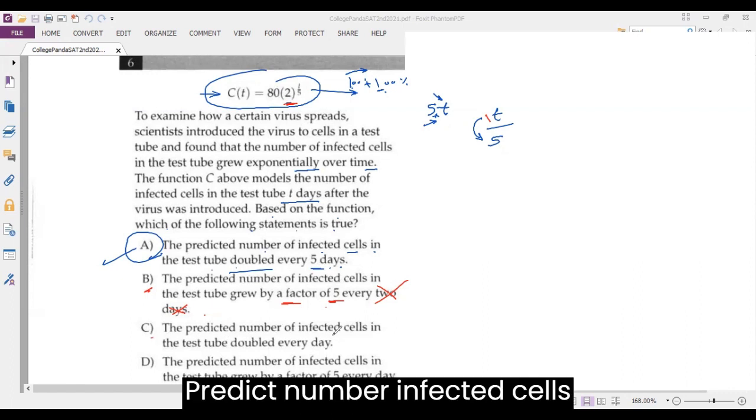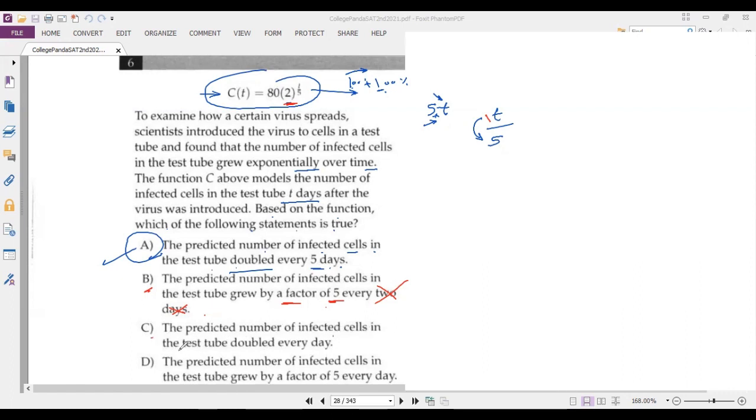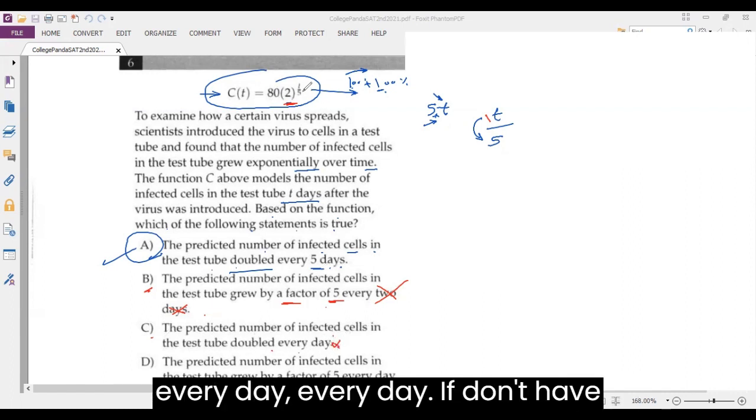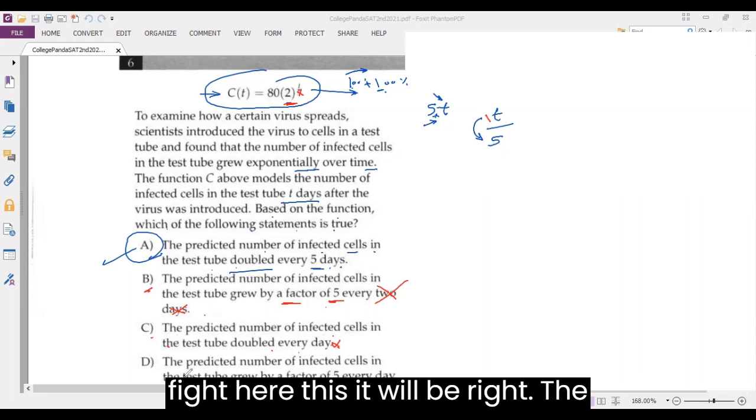Number C predicts the number of infected cells in the test tube doubled every day. Not every day. If you don't have t over five, this would be right.